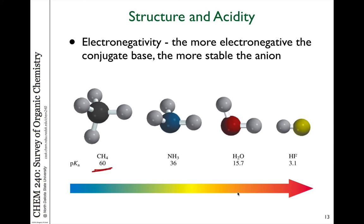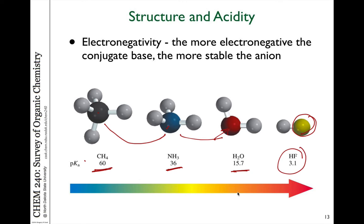Electronegativity has a huge impact on acidity. Comparing across a row: carbon as a conjugate base in CH₄ is much less electronegative than nitrogen in NH₃, which is still a very weak acid with a high pKa. Ammonia is a stronger acid than methane. Water is stronger still because oxygen is more electronegative than nitrogen. HF, with the most electronegative atom, is the strongest acid in this series.